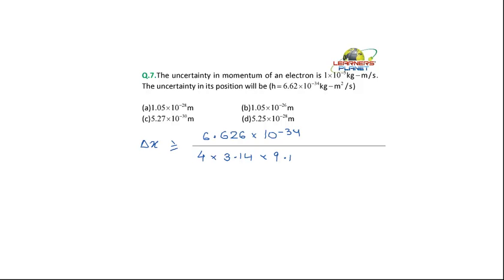What is the mass of electron? 9.1, no. The uncertainty in momentum is already provided to you. So you can put here 10 to the power minus 5, right?